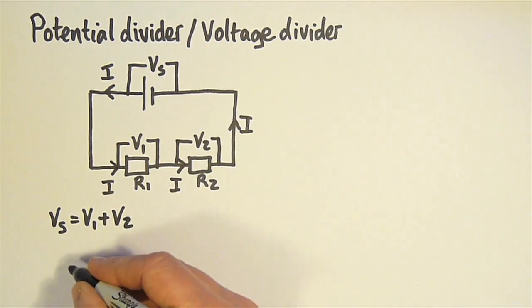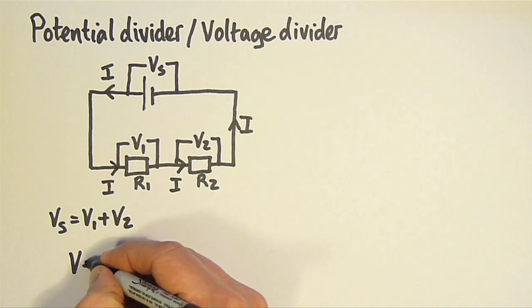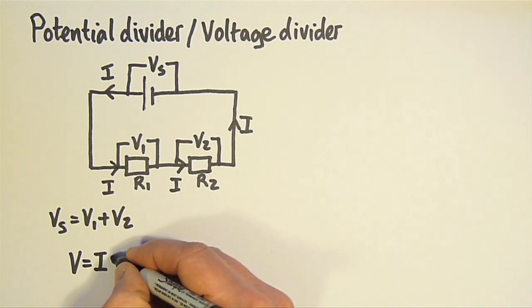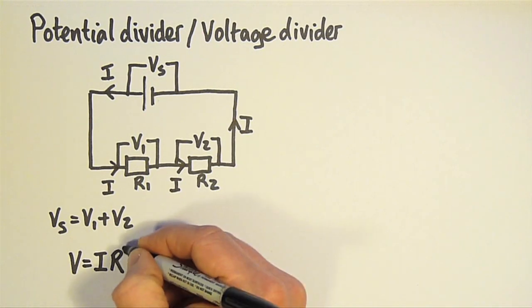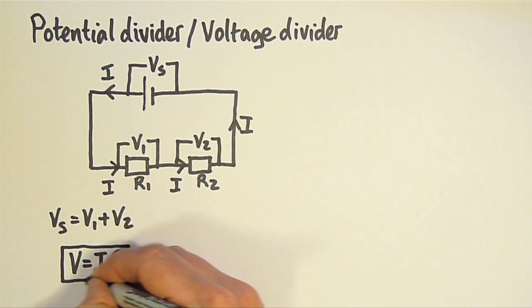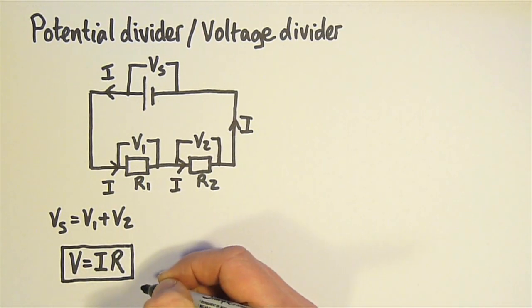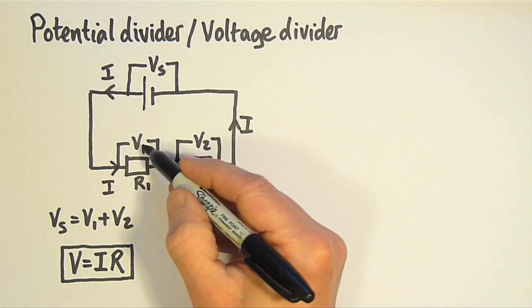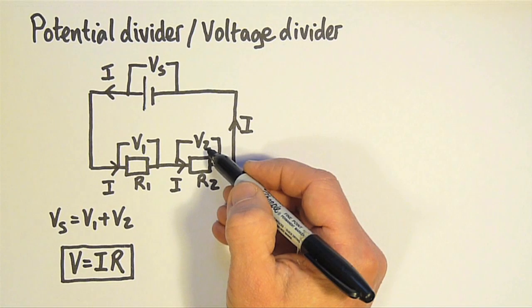For any component, the voltage across that component is equal to the current through that component multiplied by its resistance. V equals IR.